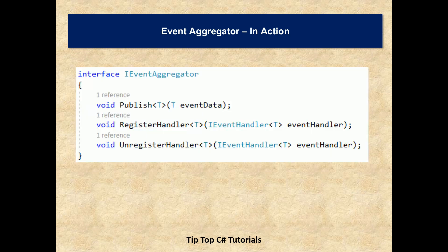Let's take a look at the draft version of Event Aggregator. As an interface, we will have a publish method for a given type, and we will have two methods for subscribing and unsubscribing — we call it a register mechanism here. We register a handler for a given type with an event handler of a given type. Respective handlers take care of the handle method. An unregister handler helps with unsubscribing the given type's handler.